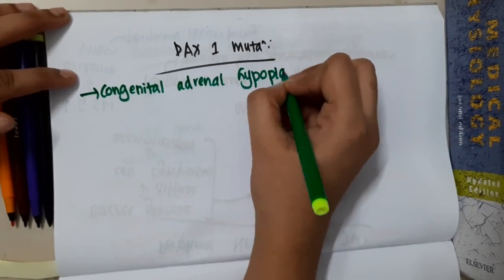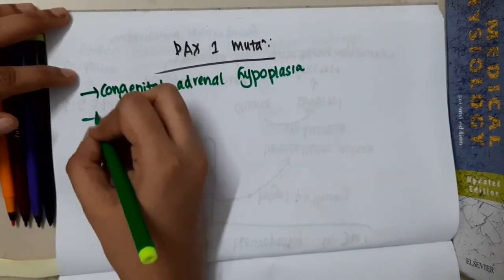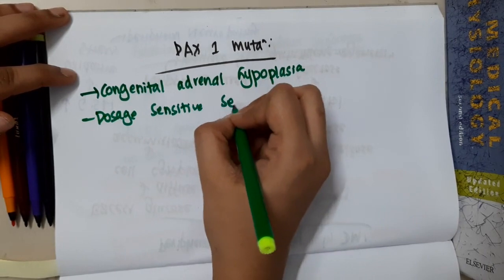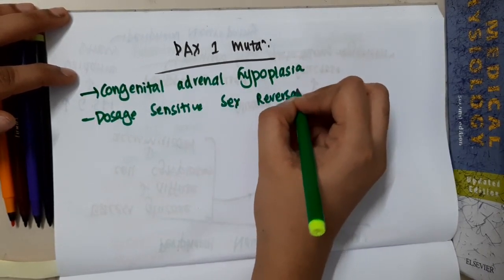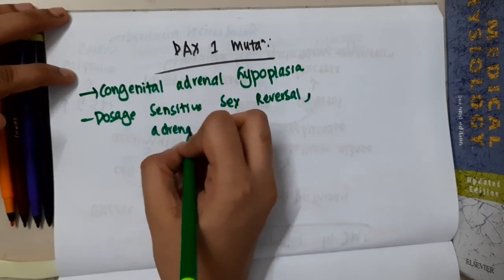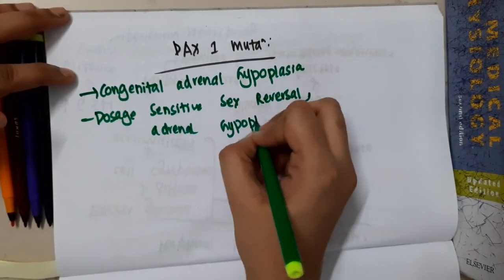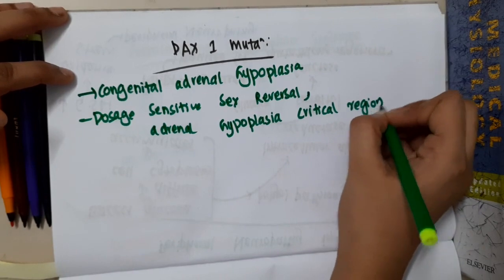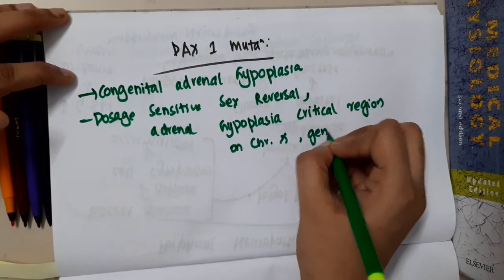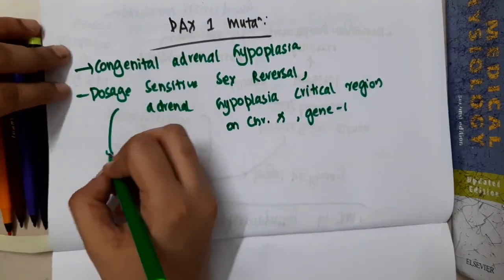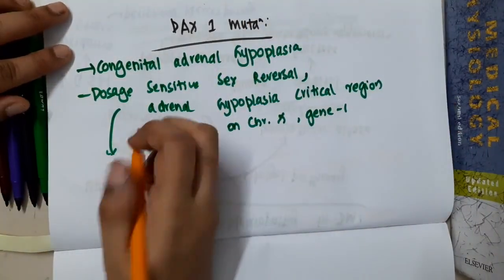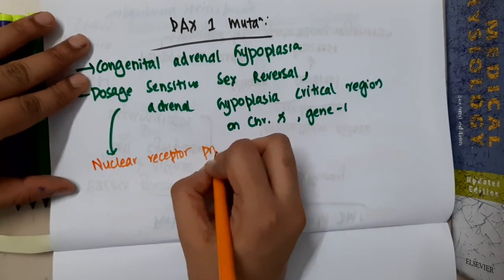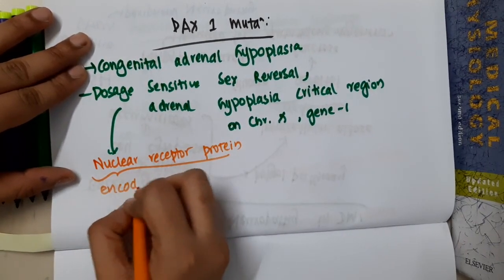What does DAX stand for? It is Dosage-sensitive sex reversal, Adrenal hypoplasia critical region on chromosome X, gene 1. This is a nuclear receptor protein encoded by the NROB1 gene.